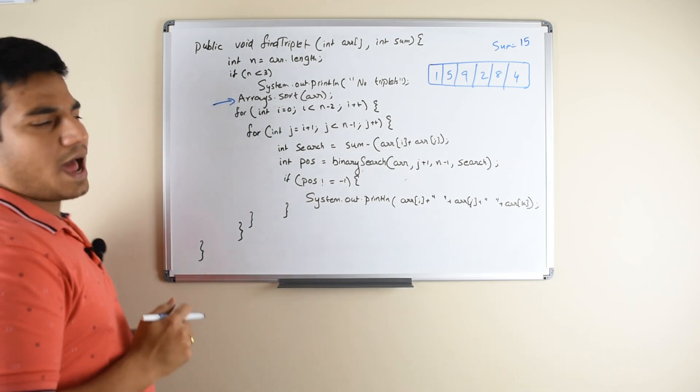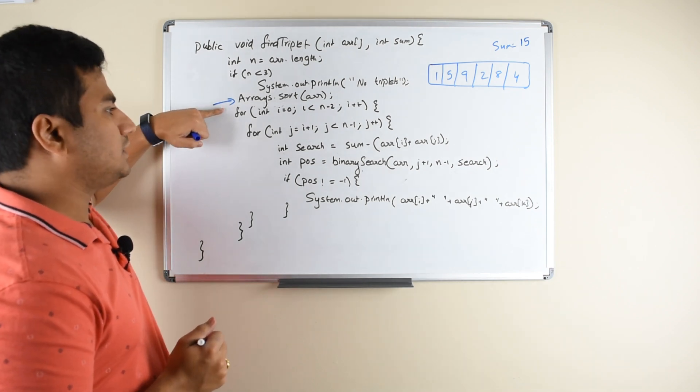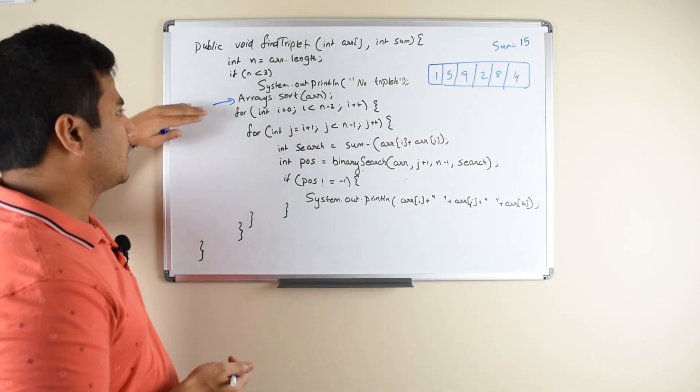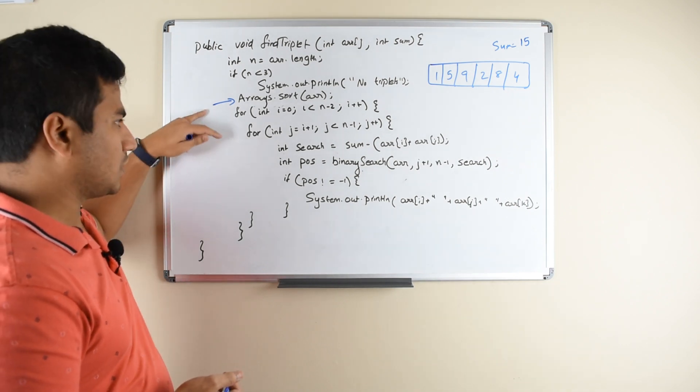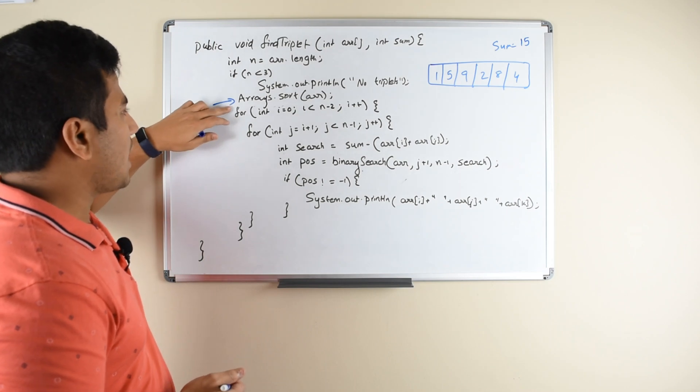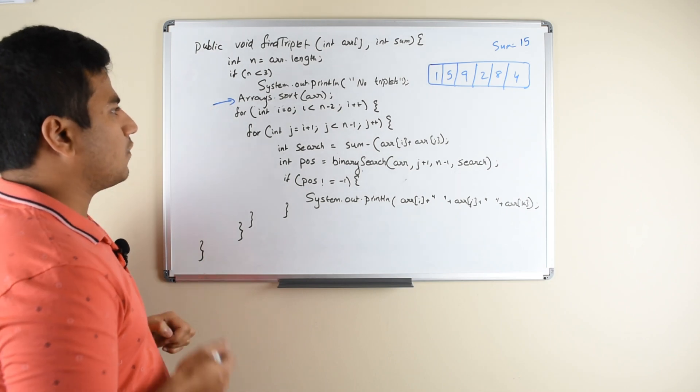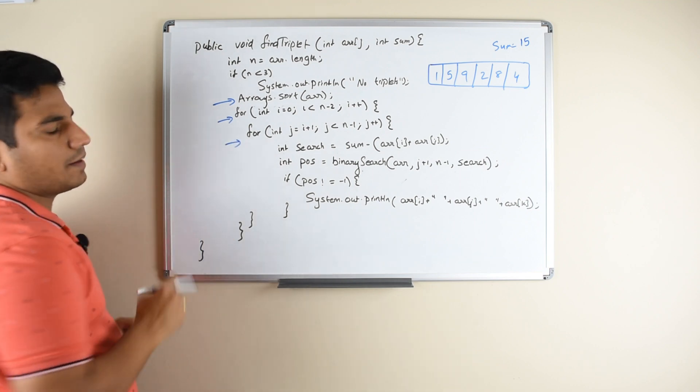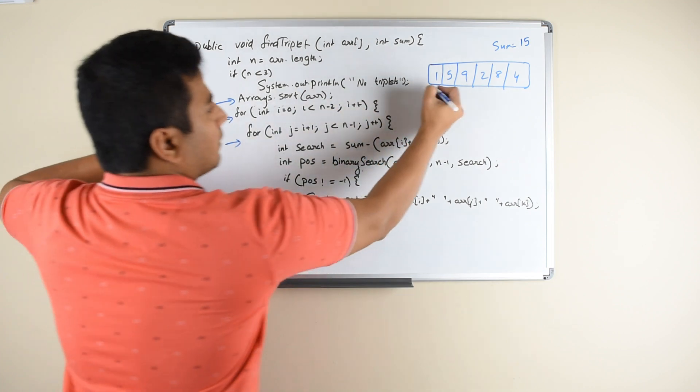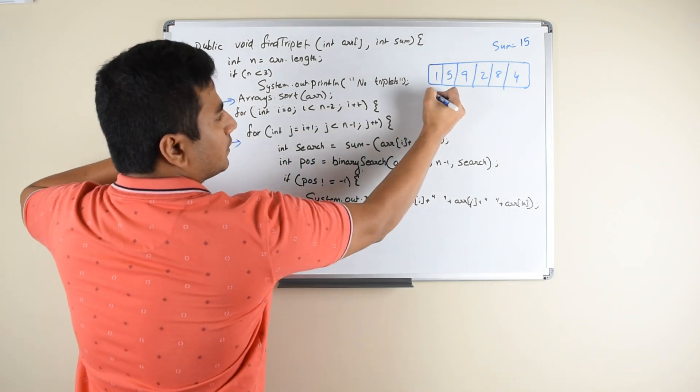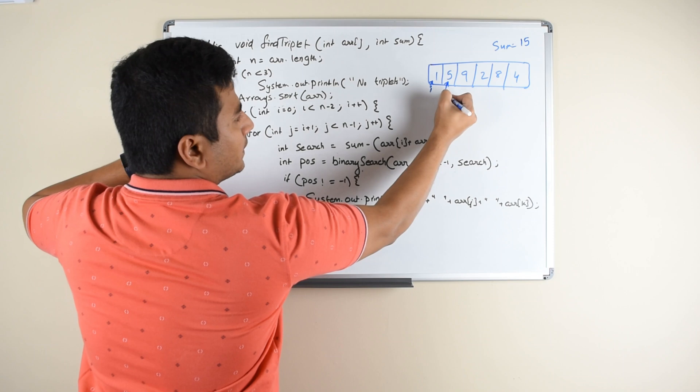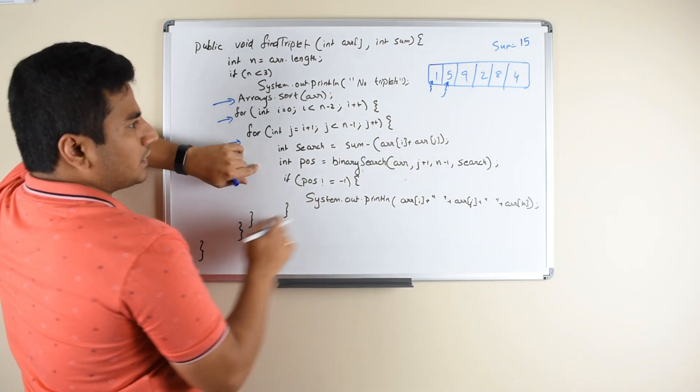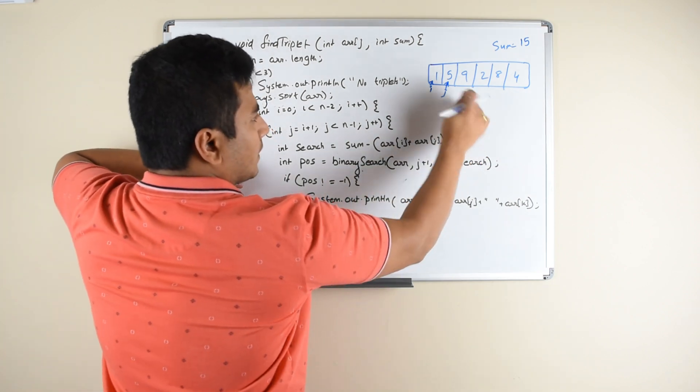One is first you are trying to sort the array here. We are sorting the array because binary search works based on the principle of sorted arrays, so you want to make sure the array is sorted before we pass on that array to the binary search. Once you have the array sorted, then what you are doing is you have the same loops for finding the first and the second element of the triplet. So here if you consider the same example, your I will be this and your J will be this.